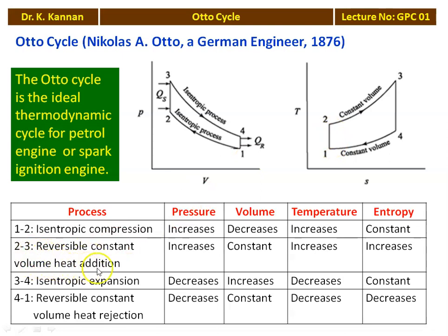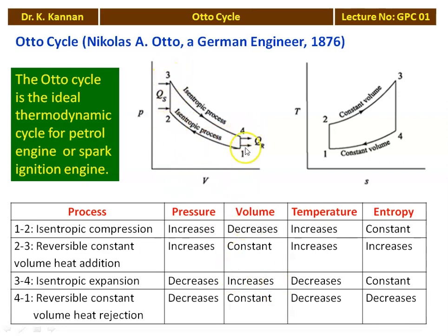For process 2 to 3, the reversible constant volume heat addition: pressure increases, volume remains constant, temperature increases, and entropy also increases because of the heat addition. For process 3 to 4, isentropic expansion: pressure decreases from P3 to P4, volume increases (V3 = V2, V4 = V1), temperature decreases from T3 to T4, and entropy remains constant — S3 = S4.